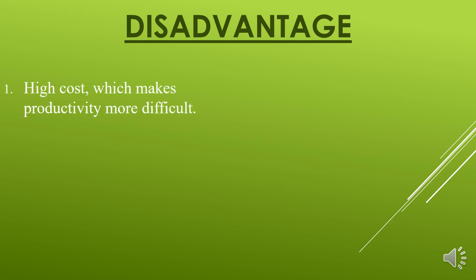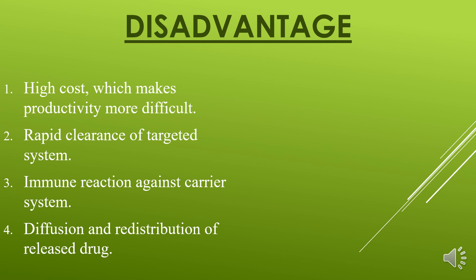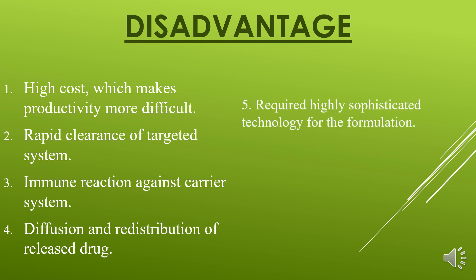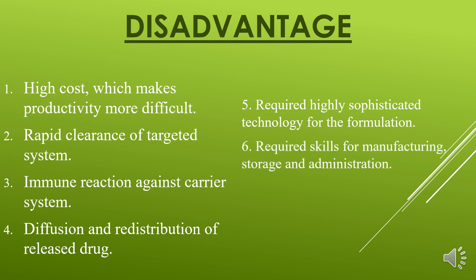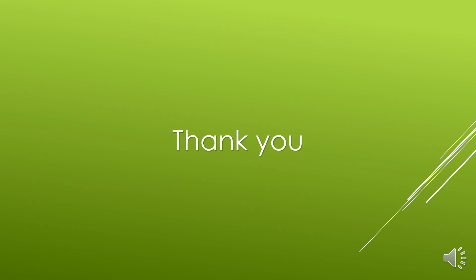Disadvantages of targeted drug delivery system: first, high cost which makes productivity more difficult; second, rapid clearance of the targeted system; third, immune reaction against the carrier system; fourth, diffusion and redistribution of the released drug; fifth, requires highly sophisticated technology for formulation; sixth, requires skills for manufacturing, storage, and administration; seventh, difficult to maintain the stability of the dosage forms; eighth, low drug loading in the formulation.